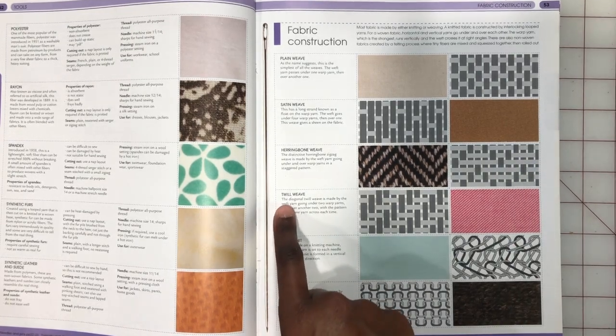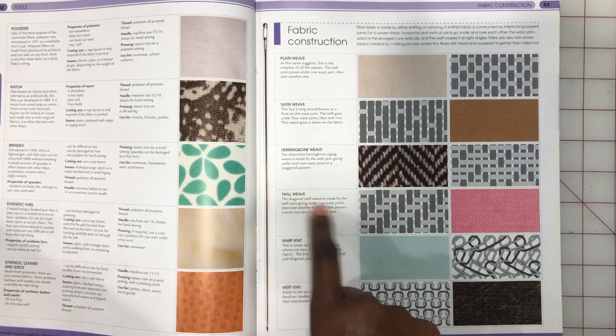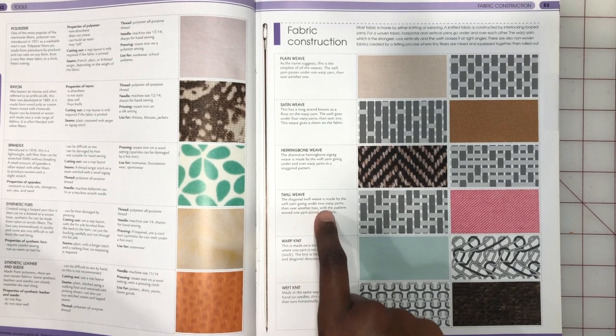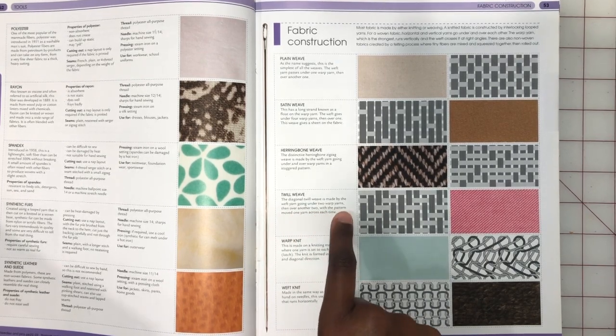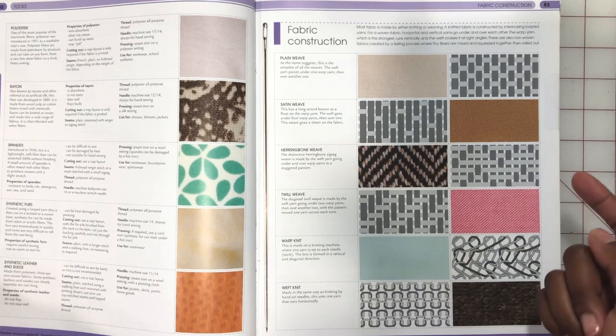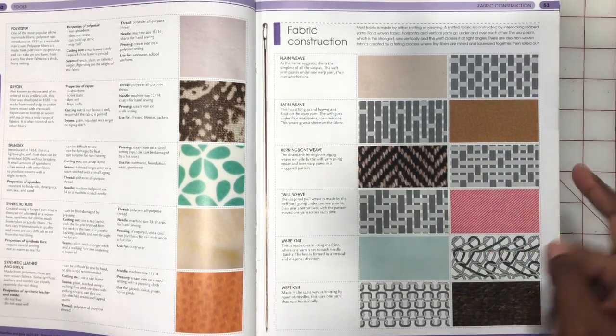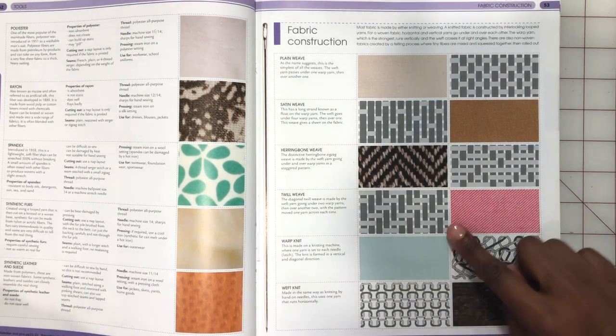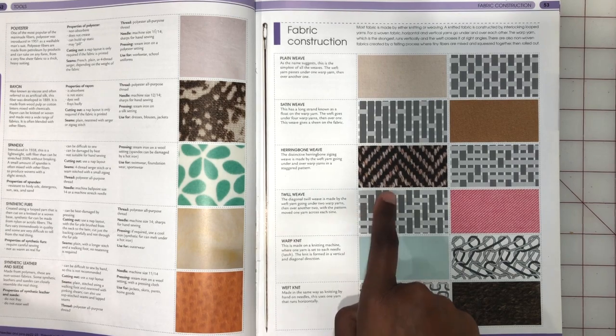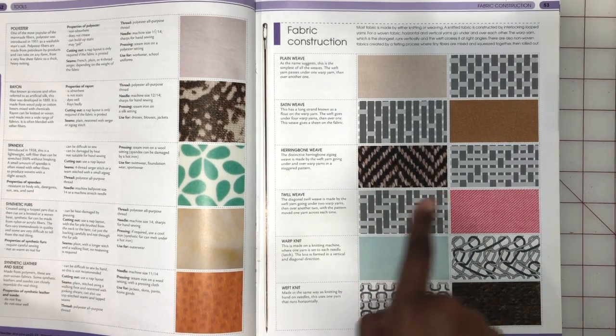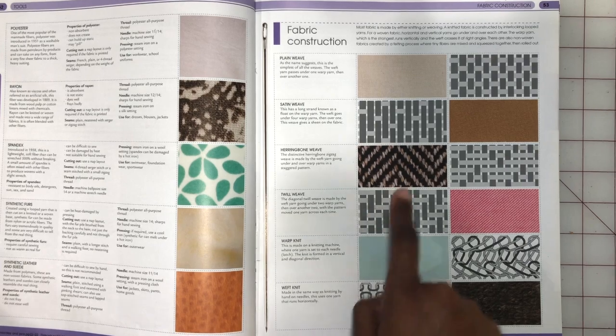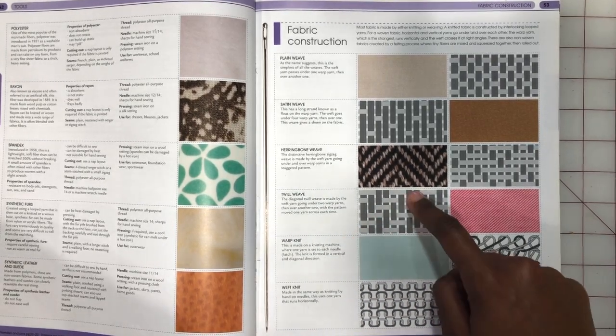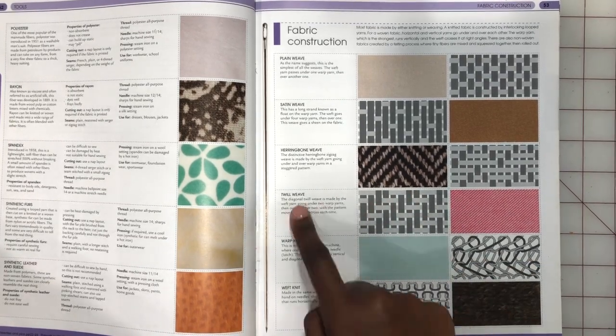Next we have the twill weave, and it's a diagonal. Twill weave is made by the weft yarn going under two warp yarns then over another two, with the pattern moved one yarn across each time. So you can see it creates these sort of tightly pulled together diagonal lines, also known as bias lines, and they're often very bumpy and they're created using these sort of lines. As you can see, there are shorter cross grains that overlap, exposing more of the lengthwise grain, and that's how you get the twill weave.